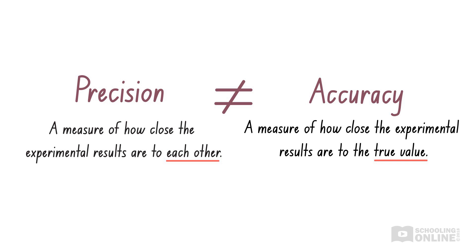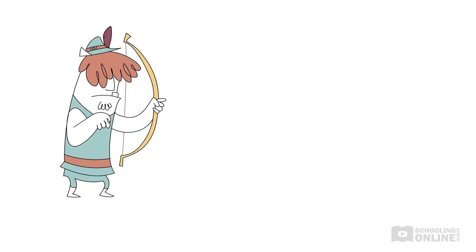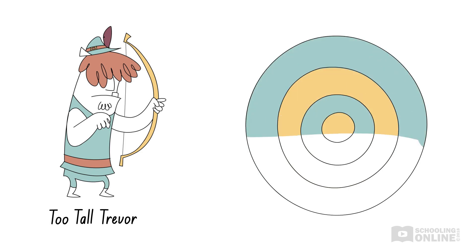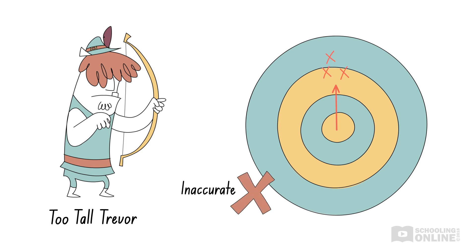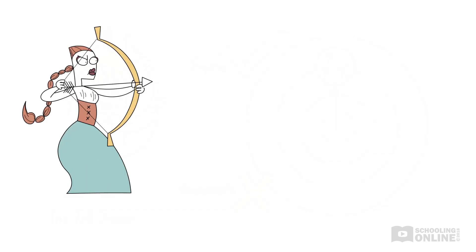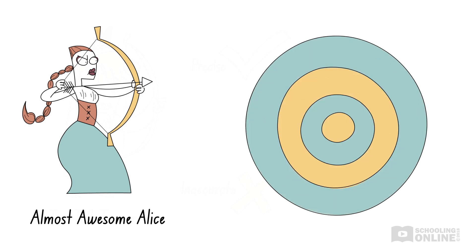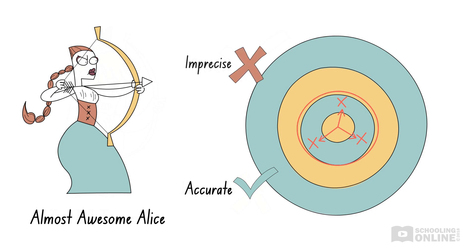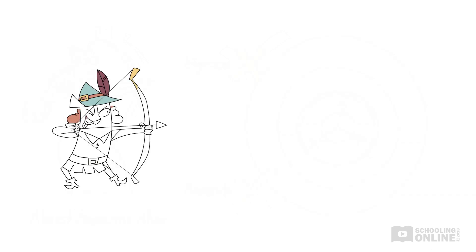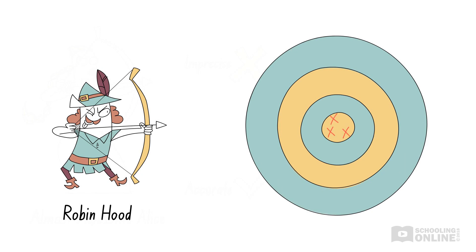Even if experimental results are accurate, they might not be precise. Let's return to Too Tall Trevor from our previous video on accuracy. Too Tall Trevor is an inaccurate archer because his arrows always land above the bullseye. However, his shots are very precise because all the arrows land close to each other. His sister, Almost Awesome Alice, faces a different dilemma — she is quite accurate as her arrows often land near the bullseye, but her arrows are spread out, so she is less precise than Too Tall Trevor. Neither sibling can compare to Robin Hood, whose arrows always hit the bullseye and land close together. Therefore, Robin Hood is both an accurate and precise archer.